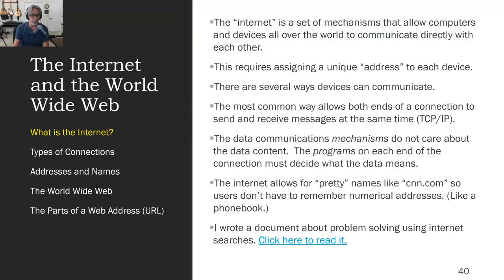Remembering everybody's number is a giant pain, so we came up with phone books. Phone books allow you to look up somebody and get their phone number — even in another city, you can have a phone book for London or New York. The Internet has the same kind of system. What happens there is that pretty names, like CNN.com, can be converted to an actual numerical address, like a phone number. This operation is very much like a phone book.